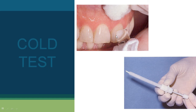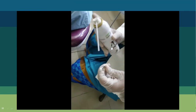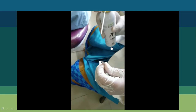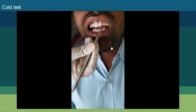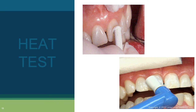A disadvantage of ice cubes is that as they melt, cold drops may fall onto the opposing arch, causing a false positive response from the wrong tooth. The best method in clinical practice is to use ethyl chloride spray, sprayed onto a small cotton swab — the vapors condense on the swab, making it very cold — which is then applied to the tooth and the patient's response is observed.